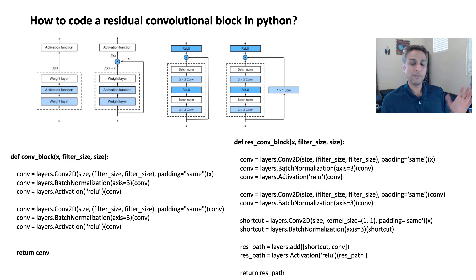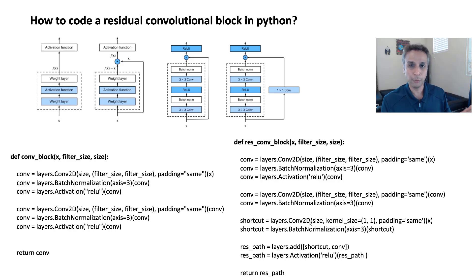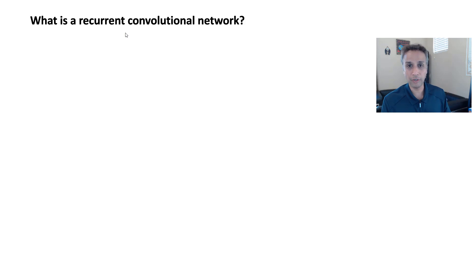You'll find lots of code online for residual networks, ResNets, and residual units. As long as you understand the block, you can use it to build any network. Now let's look at recurrent convolution networks. Recurrent — by the name — means something is happening multiple times over and over. That's what recurrent is.